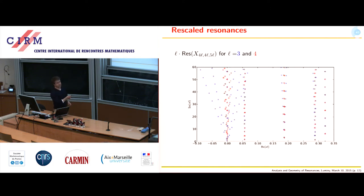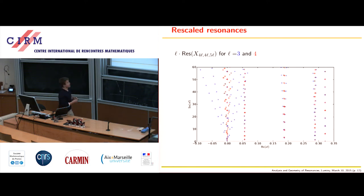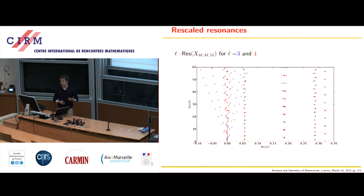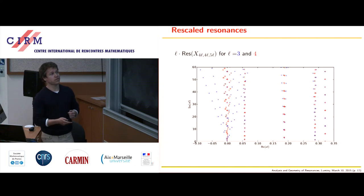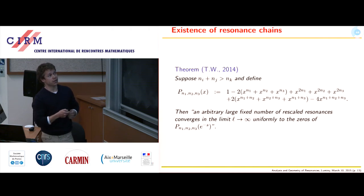If we multiply the resonances by L, we end up with a picture where L equals 3 and L equals 4 look very similar. On the first chain you barely see any difference between the red and blue crosses. Here for the last chain the differences are still quite severe, but three and four is not yet infinity. If you go to higher L values, this will also converge. The numerics suggest that this is an appropriate limit if you look at the rescaled resonances, and this can not only be observed in the numerics but can be rigorously shown.